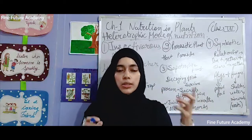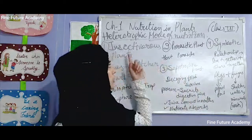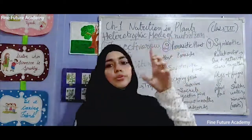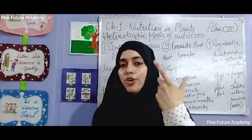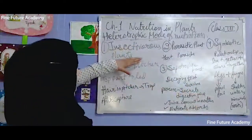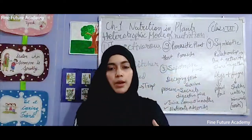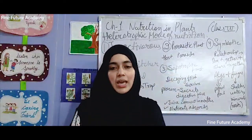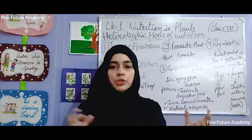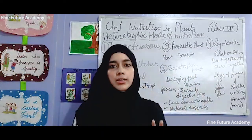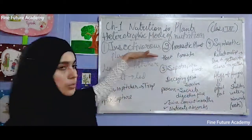Unlike green plants that do photosynthesis, some plants and some animals are in heterotrophic mode of nutrition — they depend on others. So first it comes to insectivorous plants. You have all heard about insectivorous plants, even in cartoons — if you go near them, they will trap you and eat you. Yes, such plants actually exist.